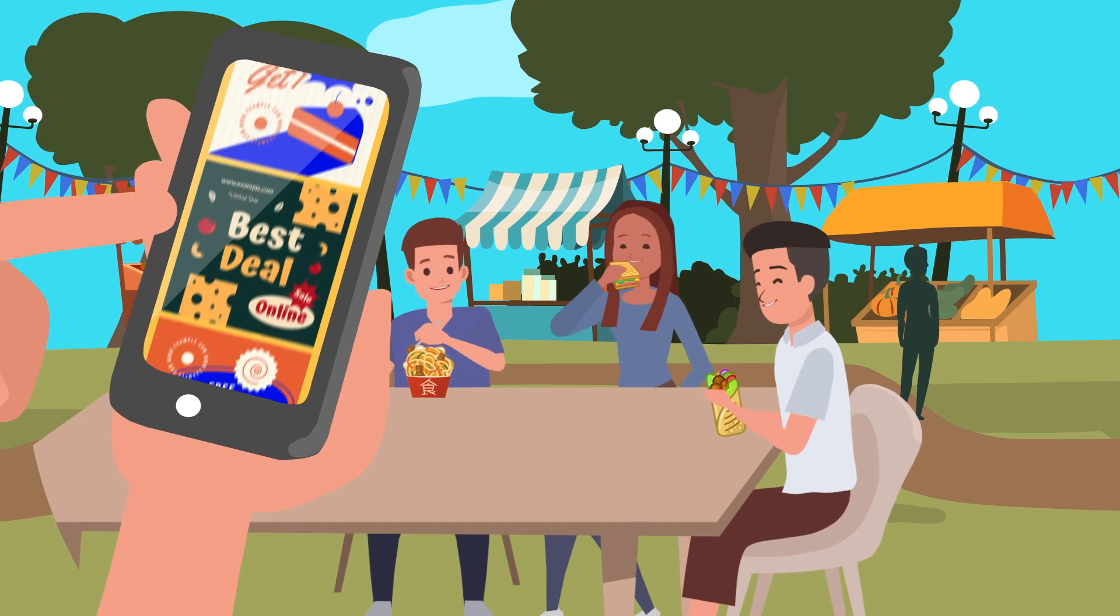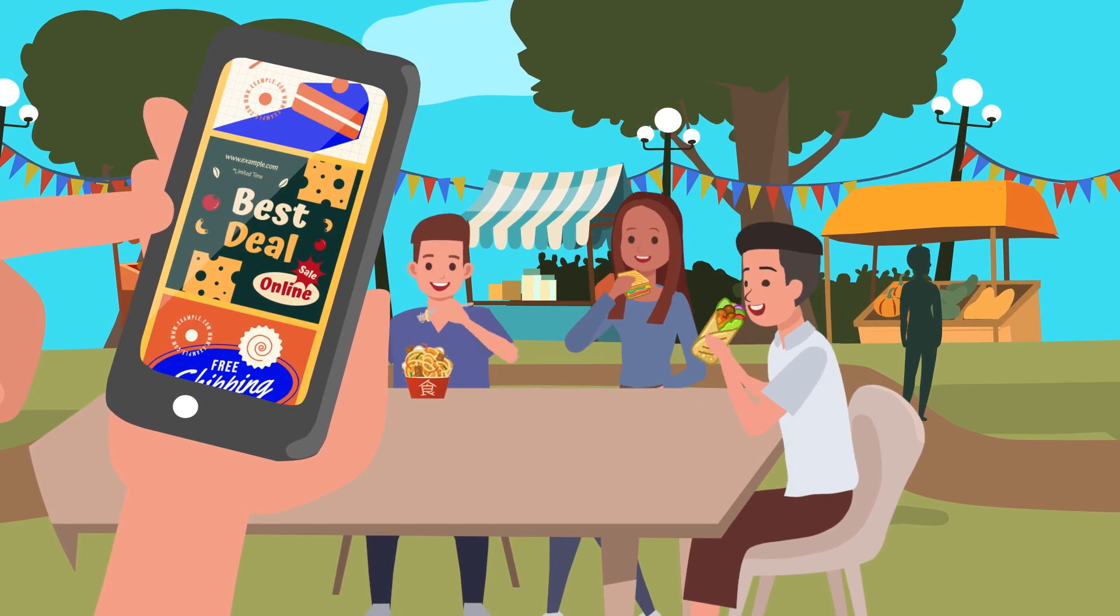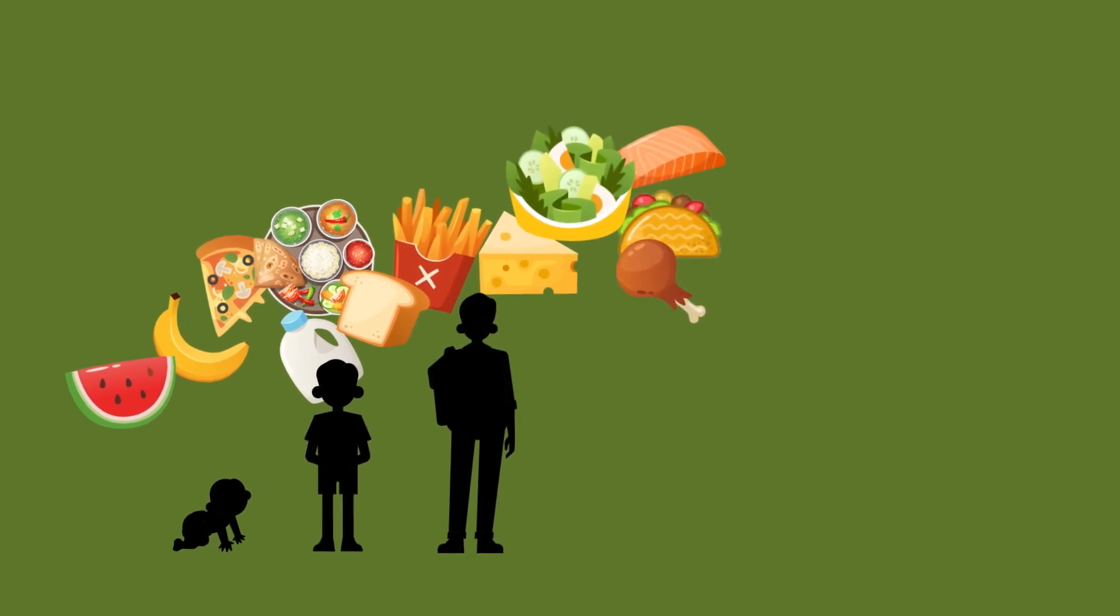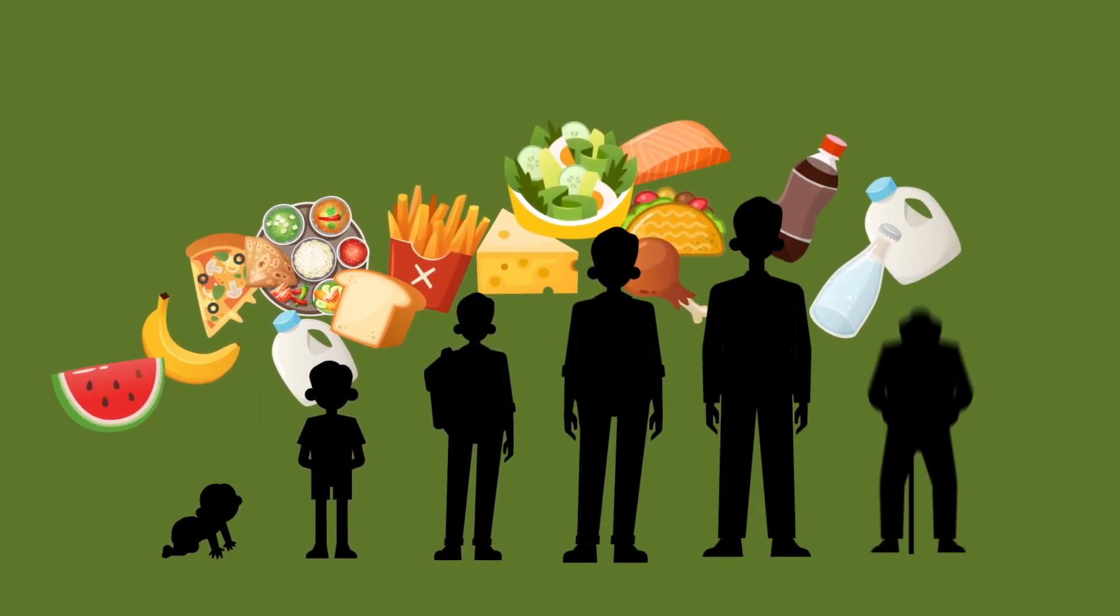It turns out that what we eat as a child and teenager affects our growth and development. It can also affect our health as an adult, so it's very important we eat enough food and the right food.